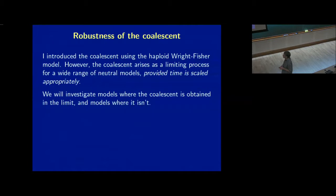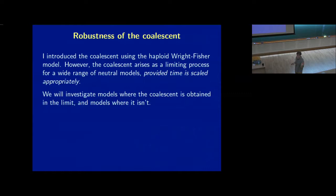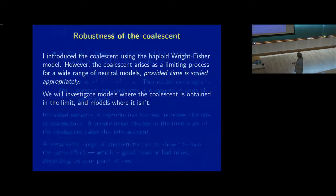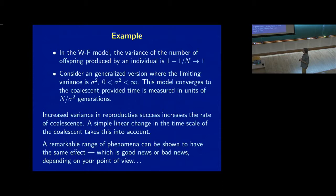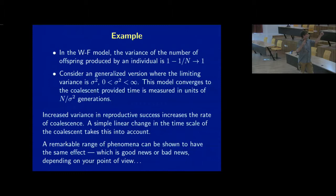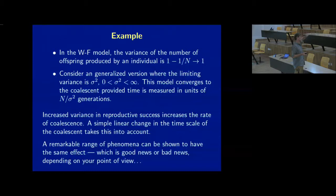For instance, I introduced the coalescent using a haploid Wright-Fisher model, but just like the diffusion approximation, once you go to the scaling approximation a whole bunch of different models converge to the same coalescent — you can derive the same coalescent using the Moran model. It doesn't matter whether you're haploid or diploid; you don't actually need Wright-Fisher reproduction. All that comes out in the wash as long as you know what you're doing.